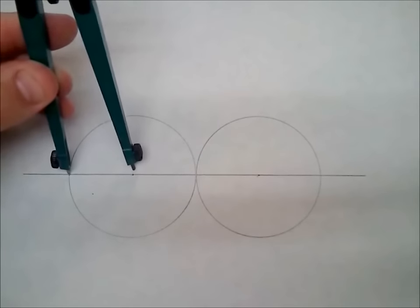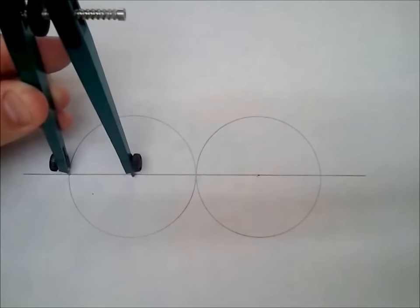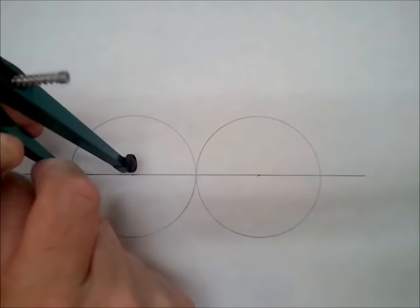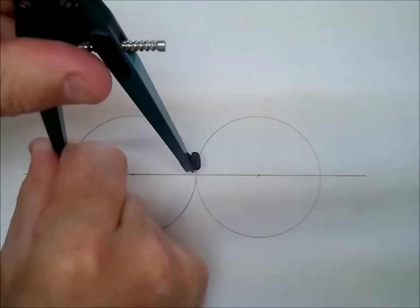So part one in the procedure was using the radius of the first two circles we drew. Now we're gonna go to step two where we change it to the diameter of the first circle.